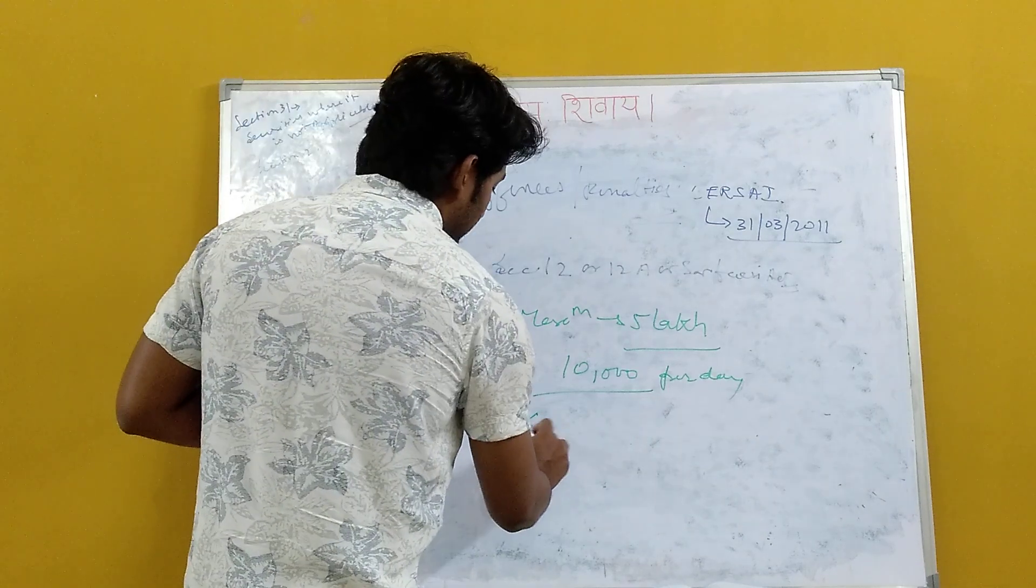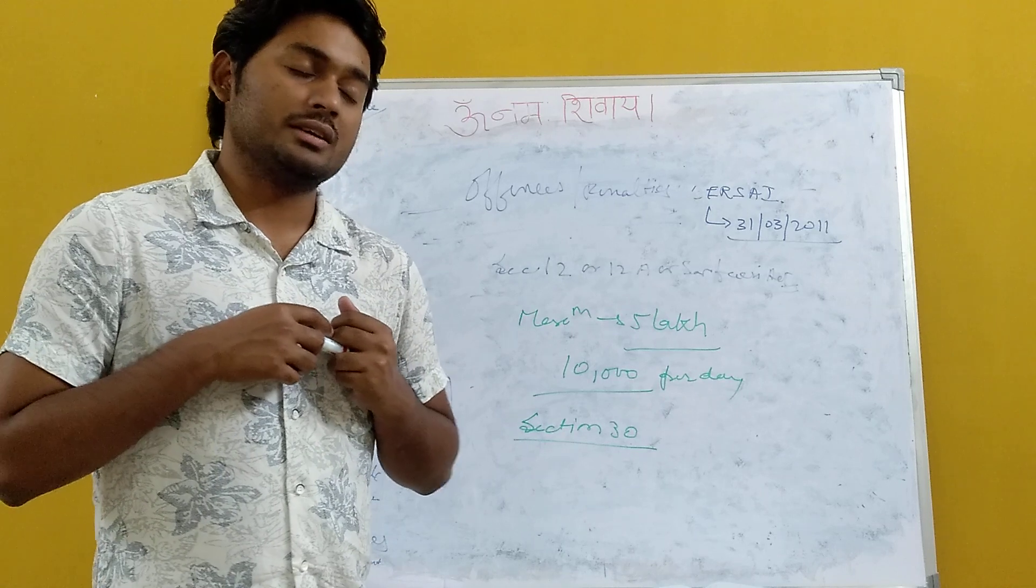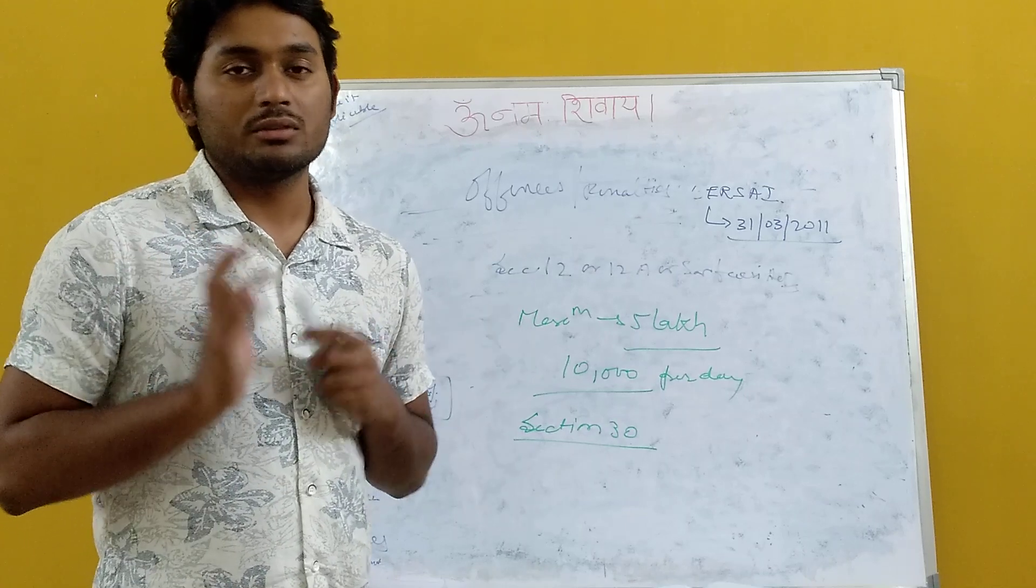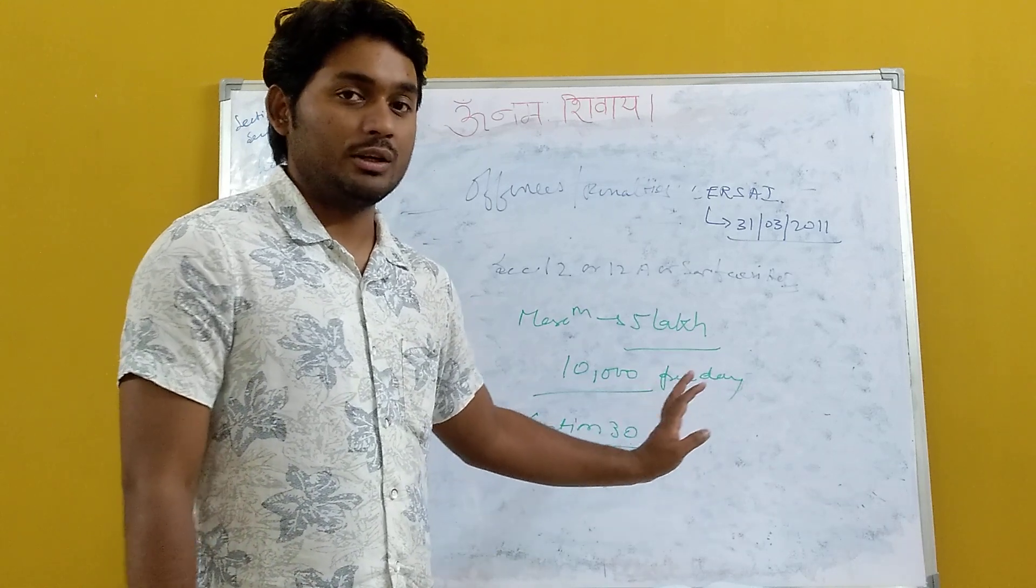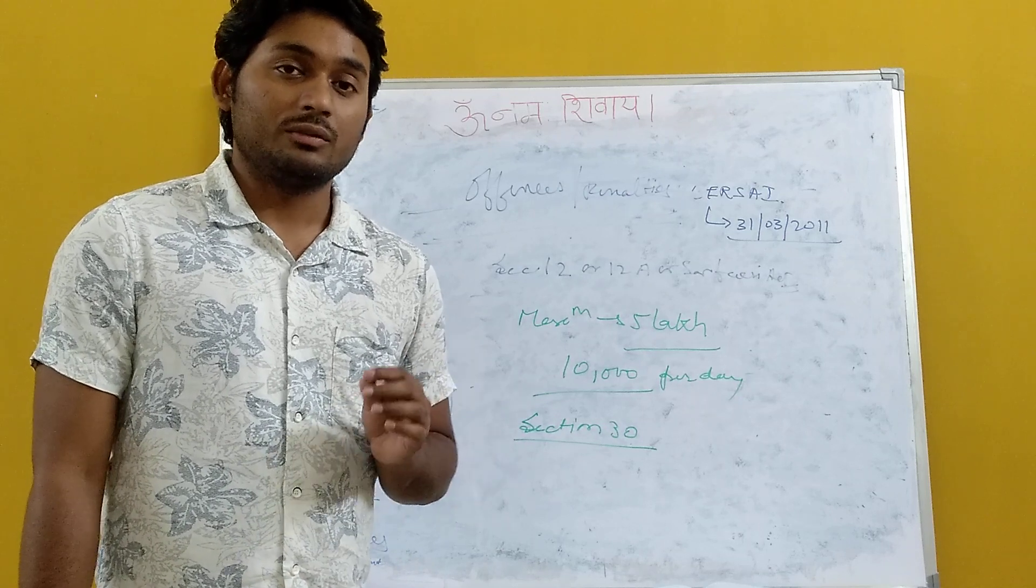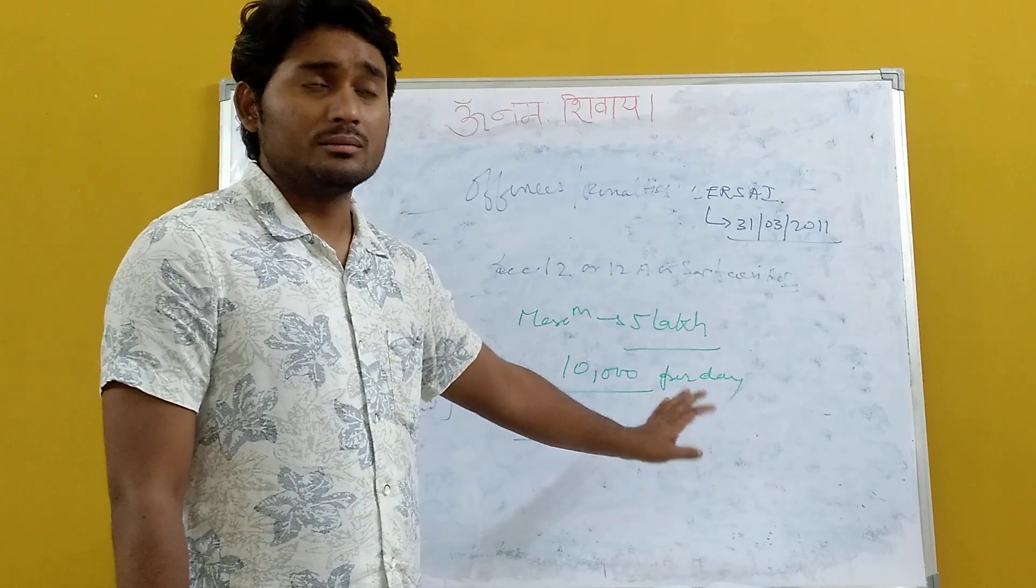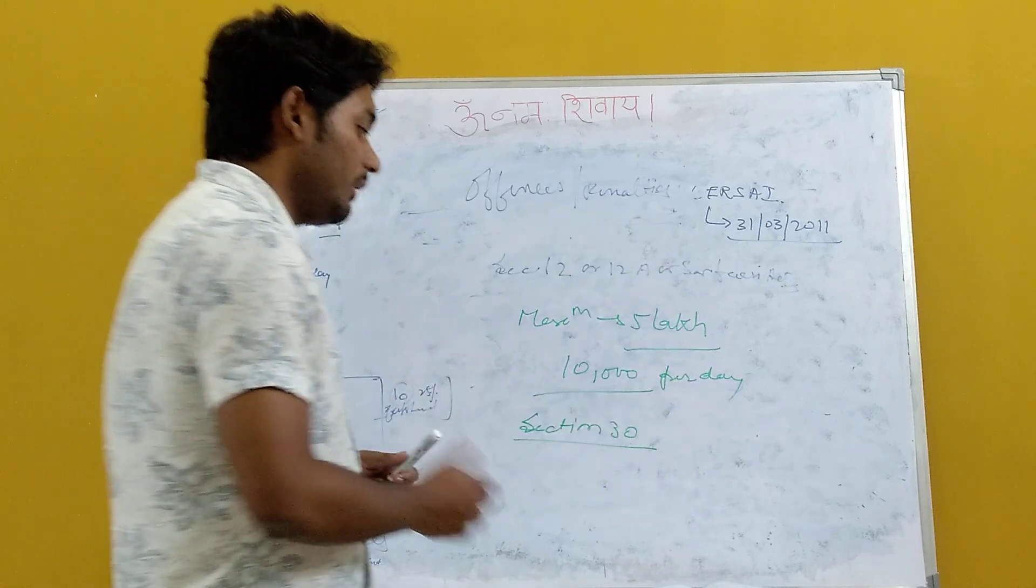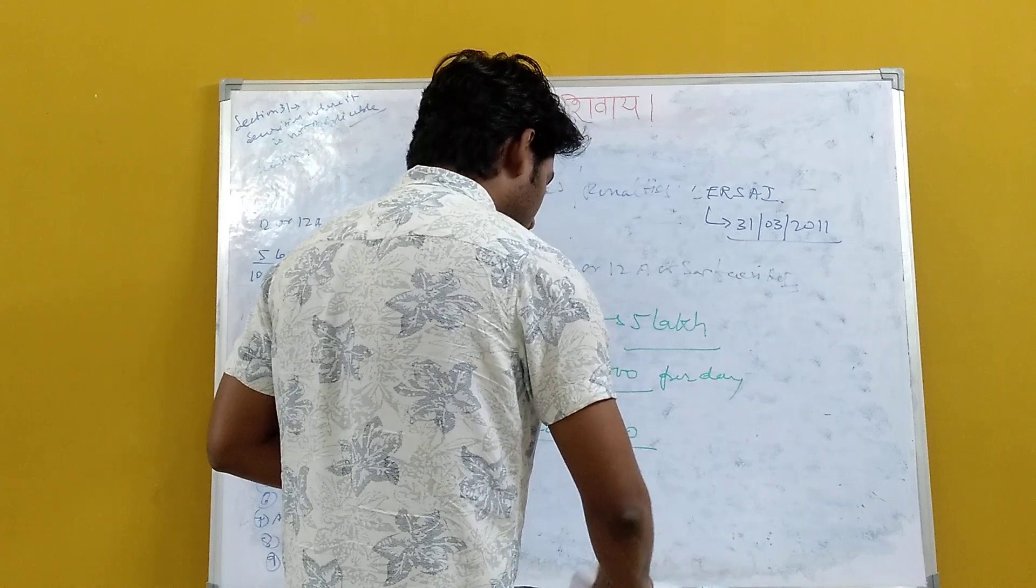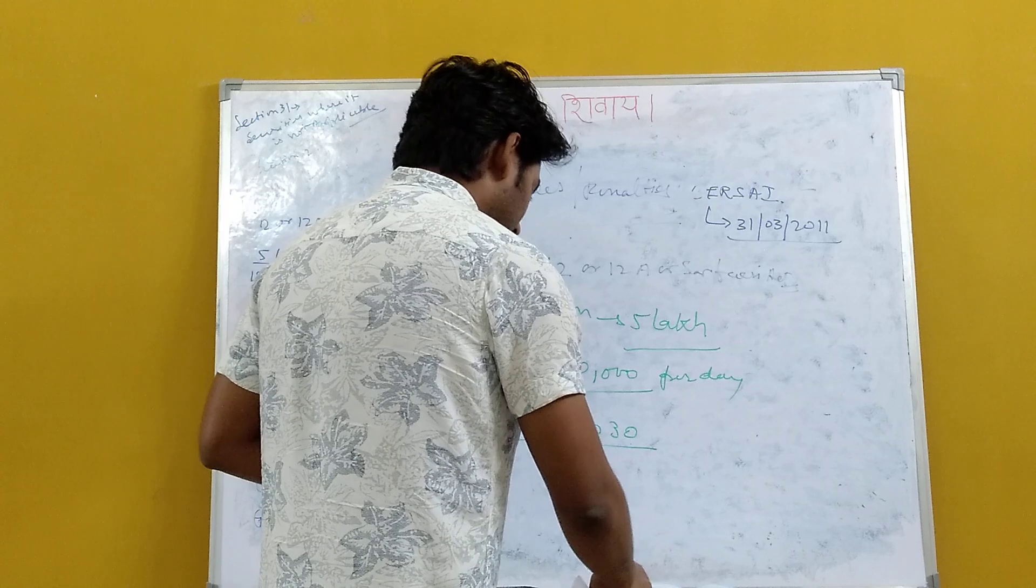So, if 5 lakh is the maximum amount, then also it is not complying, then you can take a 10,000 per day additional penalty on that. Now, there is one more part in Section 30. Section 30 of the Act says that if RBI has punished any asset reconstruction companies in violation of Section 23, 24, 25, 27, 28 or any provisions of the SARFAESI Act, then any court shall not take it as a cognizable offence.